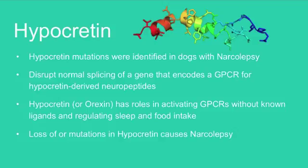In dogs with narcolepsy, mutations were identified in the hypocretin gene. These mutations disrupt normal splicing of a gene that encodes a GPCR for hypocretin-derived neuropeptides. Hypocretin also has roles in activating GPCRs without known ligands and regulating sleep and food intake. Loss of, or mutations in, hypocretin causes narcolepsy.